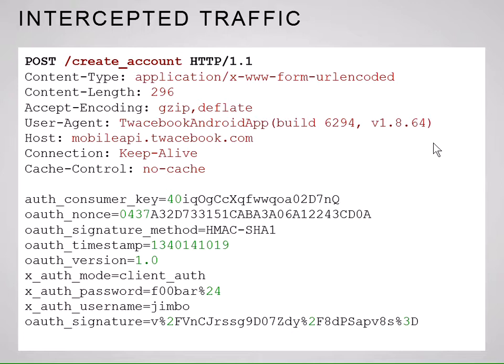This is the intercepted traffic we're looking at — very similar to what you see in a lot of HTTP-based APIs. Basic POST request, content type, and we also see OAuth stuff here. OAuth is getting used a lot more these days. We see it passes in a password, username, OAuth signature, and it's creating these fake accounts.